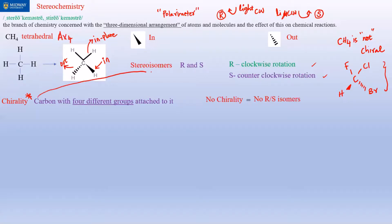No chirality means no R and S isomers. You must have chirality to even have R and S. If there is no chirality, there is no R and S—it's just that simple.